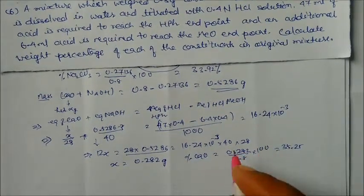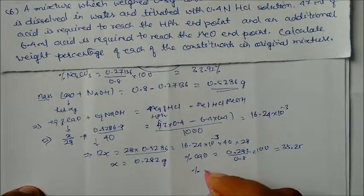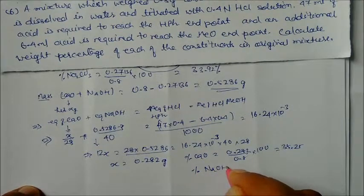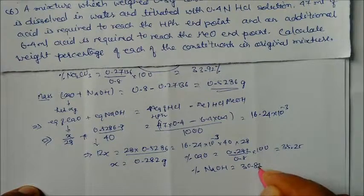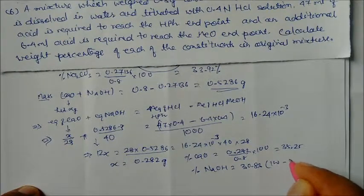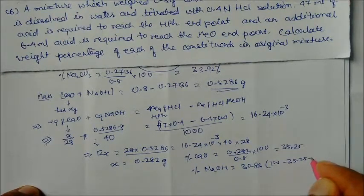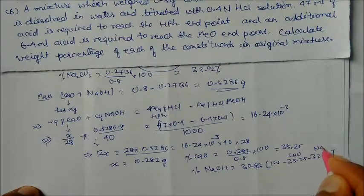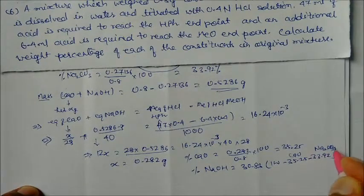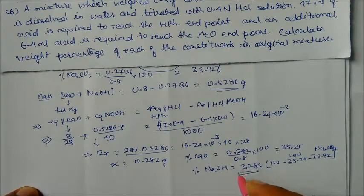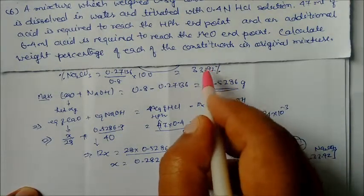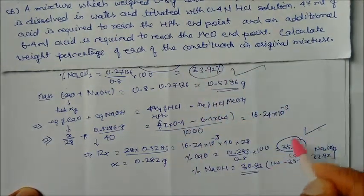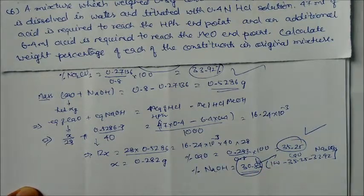Percentage of CaO = (0.282 / 0.8) × 100 = 35.25%. Percentage of NaOH = 100 − 35.25 − 33.92 = 30.83%. These are the mass percentages of all three components in the mixture: 33.92% Na₂CO₃, 35.25% CaO, and 30.83% NaOH.